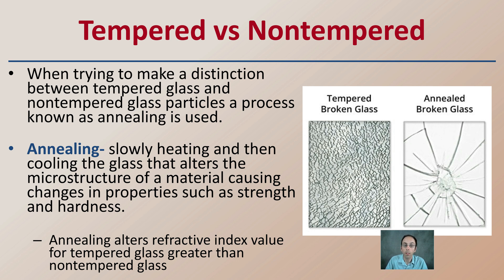Annealing is the slow heating and then cooling of glass that alters the microstructure of the material, causing changes in properties such as strength and hardness. Annealing alters the refractive index value — tempered glass has a greater refractive index than non-tempered glass — so this can also aid in determining refractive index for a piece of glass.